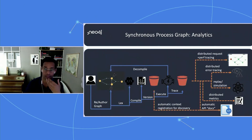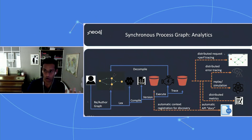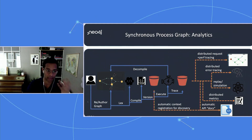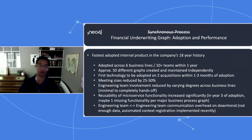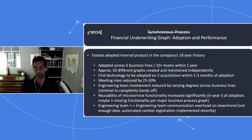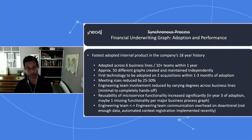Some value-adds from this approach: once we have execution, we can trace it to get distributed request tracing, performance tracing, error tracing, replay semantics, metrics, and automated API documentation — all because we have a single artifact representing intent clearly with a consistent language for creating orchestration flows. In terms of adoption, this was created in circa 2018 and was the fastest adopted internal product in the company's history. I'll take questions in the panel.